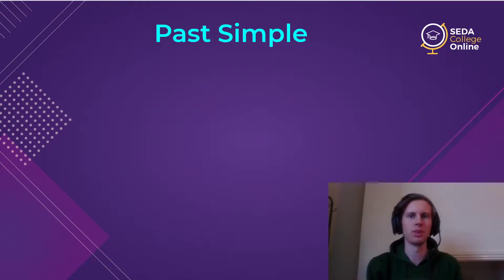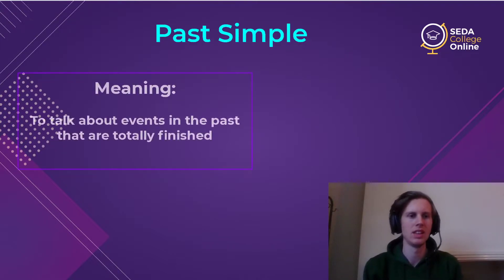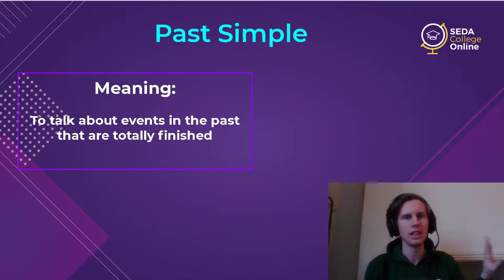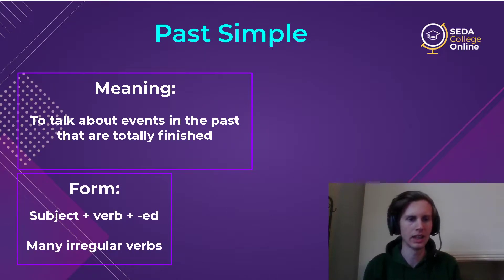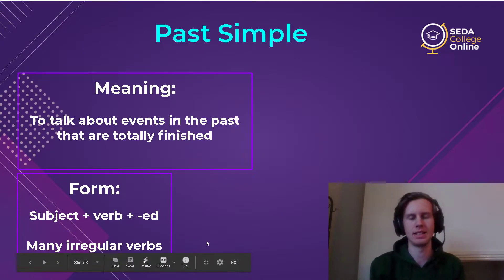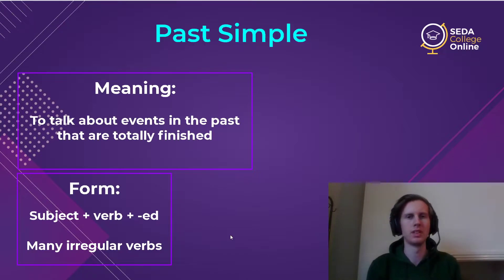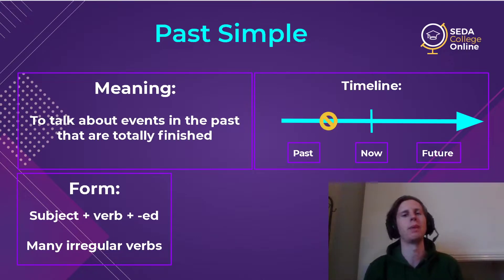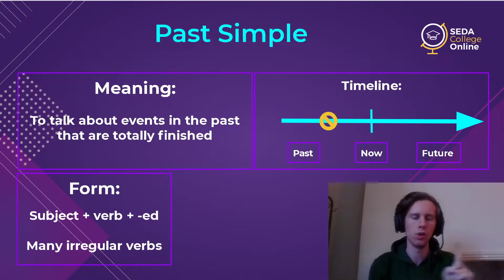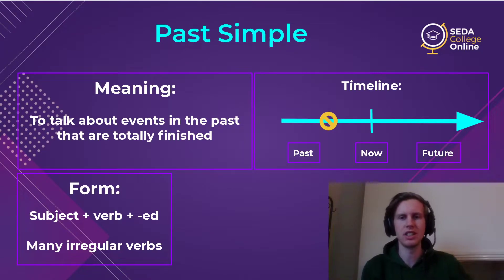We're going to begin with the past simple. This is the one I think you know the most about. The past simple is always used to talk about events that are totally finished in the past — something that happened in the past, has no connection to now, and is totally finished. Just one event in the past. You make this with the familiar formula: subject + verb + ed. Of course, there are many irregular verbs for the past simple. If we think about this on a timeline, we've got the past, now, and the future — just one point in the past.